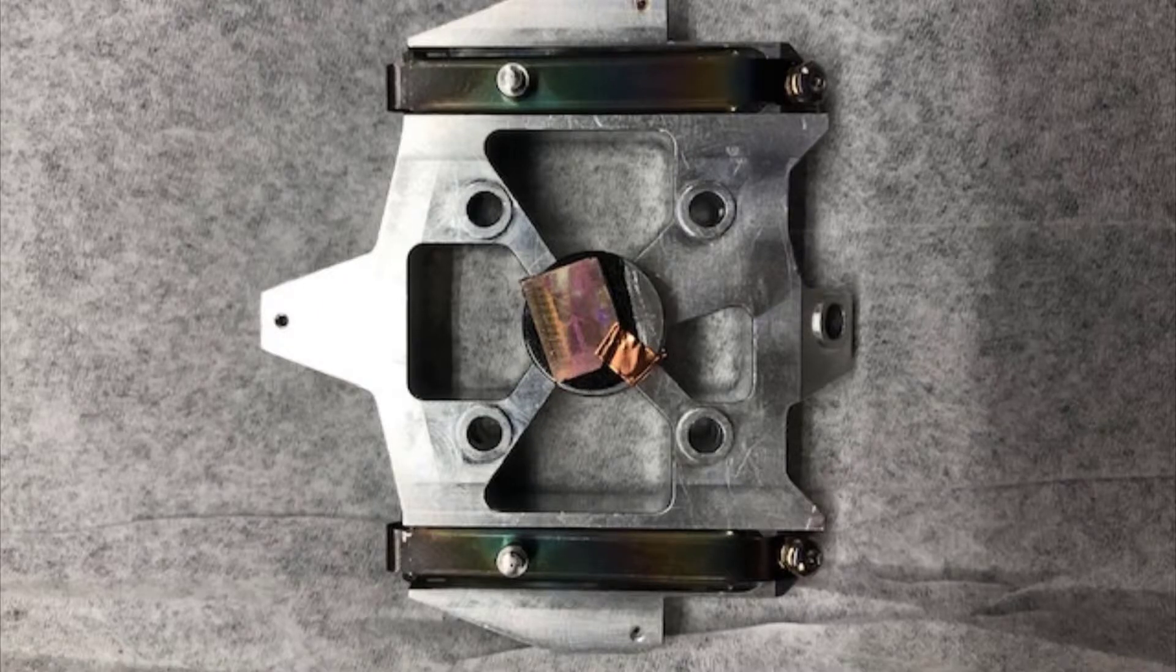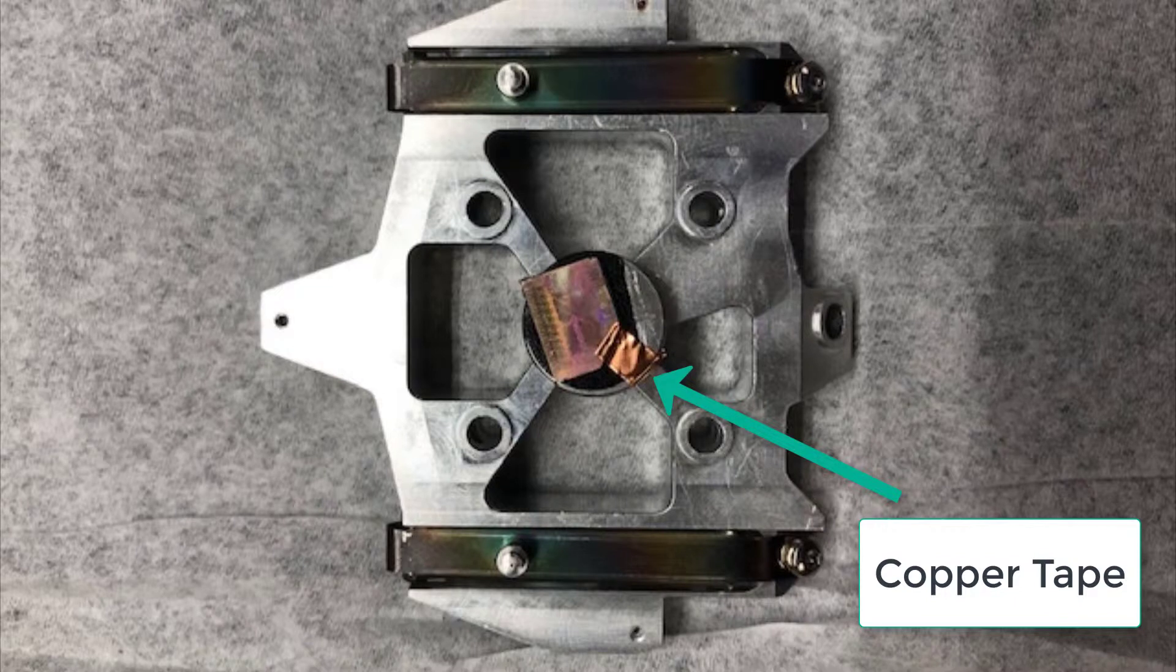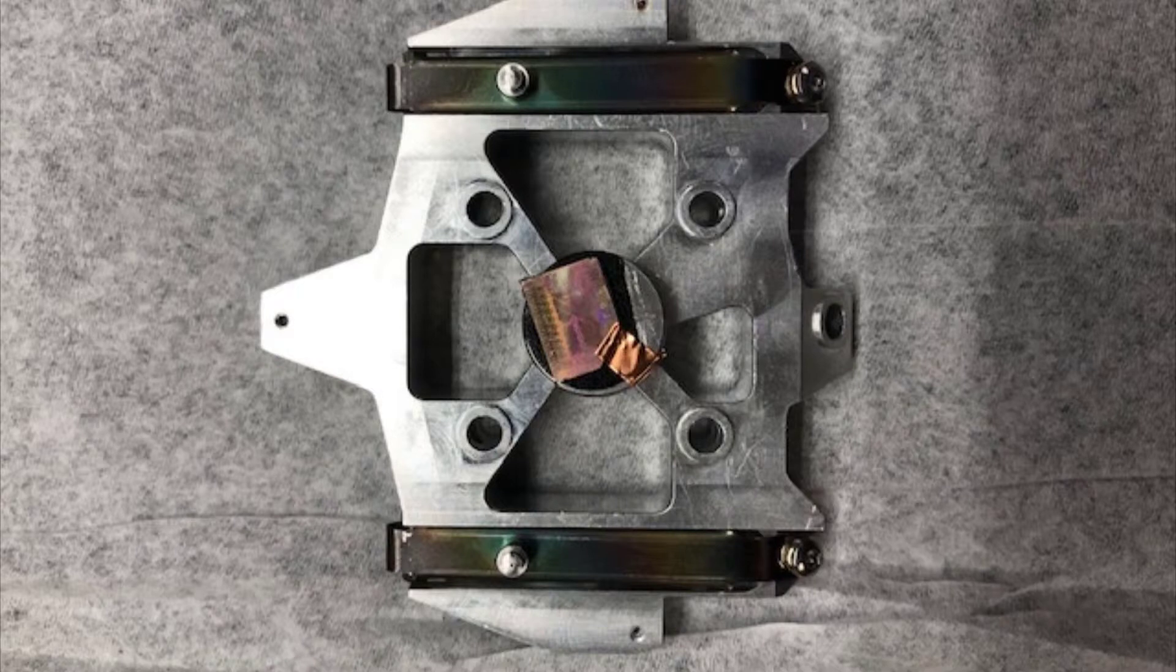Depending on the type of sample, you may wish to attach a small piece of copper tape extending from your sample to the metal stub. The tape provides a conductive path for the electrons and will minimize charging of your sample while imaging.